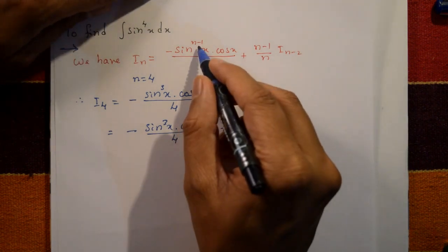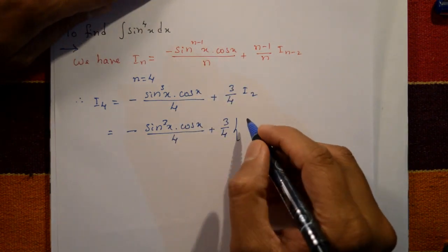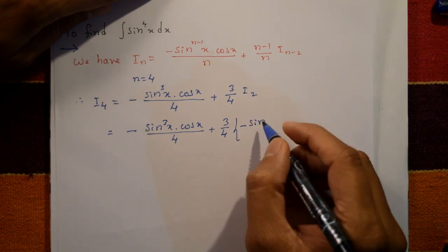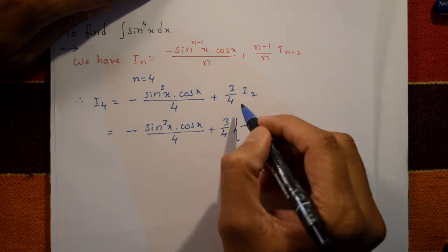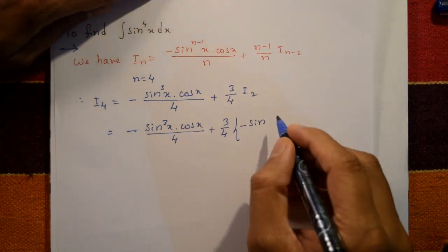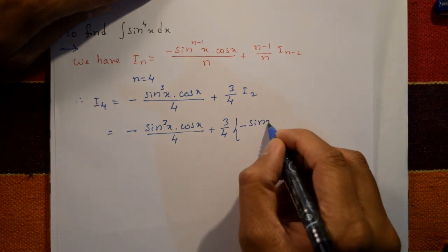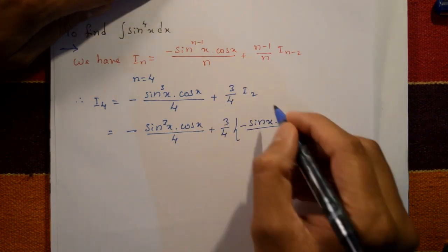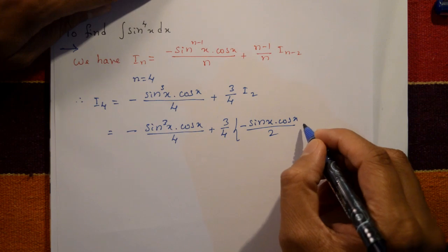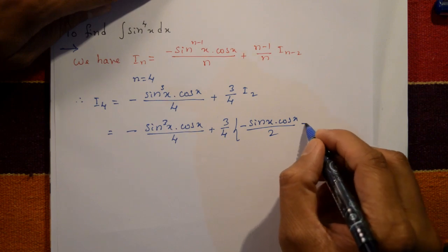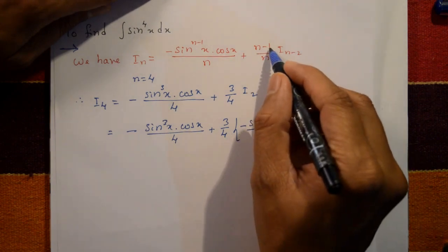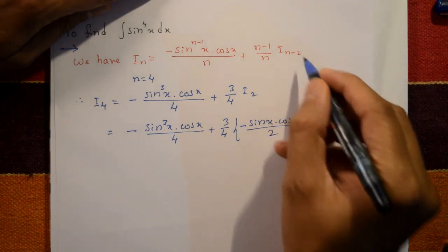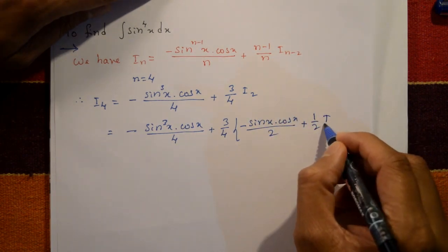Put n = 2 into the formula: I₂ = minus sin^(2-1)x · cos x divided by 2, plus (2-1)/2 · I_(2-2), which gives minus sin x · cos x / 2 plus (1/2) · I₀.